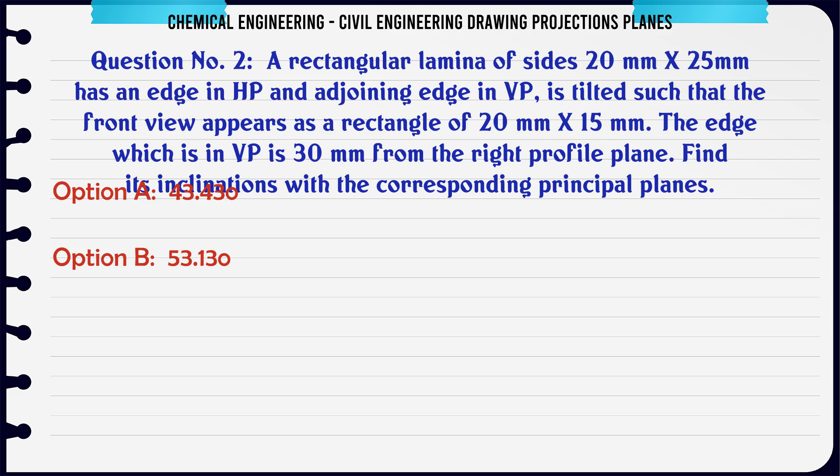by 25 mm has an edge in HP and adjoining edge in VP is tilted such that the front view appears as a rectangle of 20 mm by 15 mm. The edge which is in VP is 30 mm from the right profile plane. Find its inclinations with the corresponding principal planes.